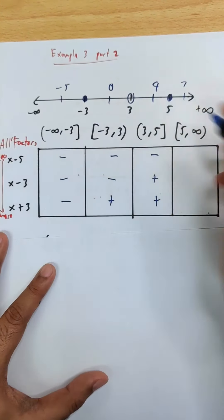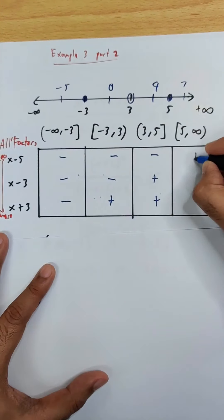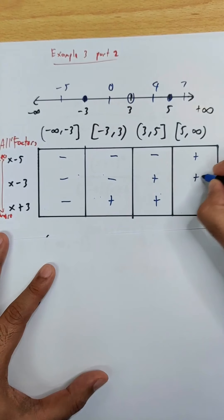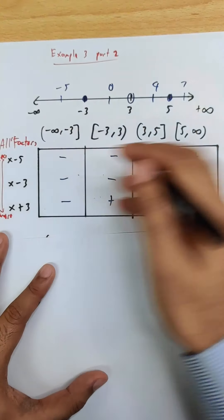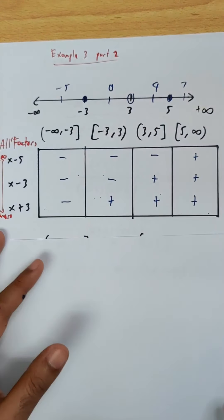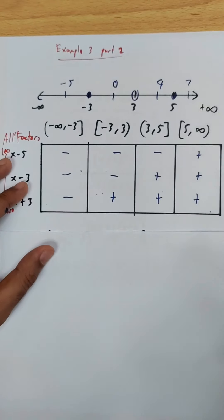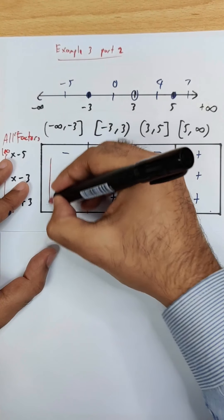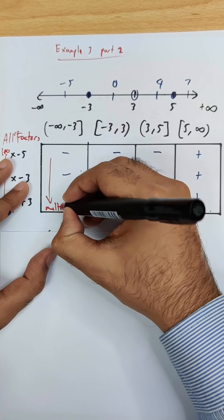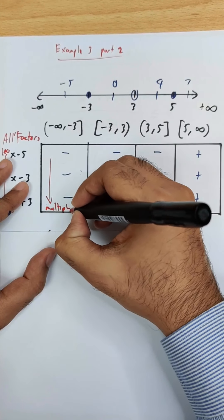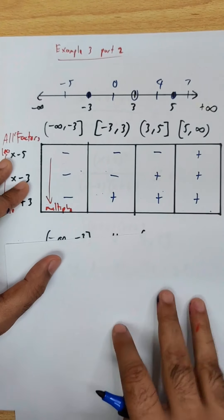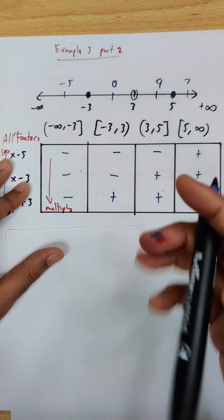For 5 to infinity, choose 7: 7 minus 5 positive, 7 minus 3 positive, 7 plus 3 positive. Now multiply all the signs: negative, negative, negative, positive. That gives negative, positive, negative, positive for the four intervals.